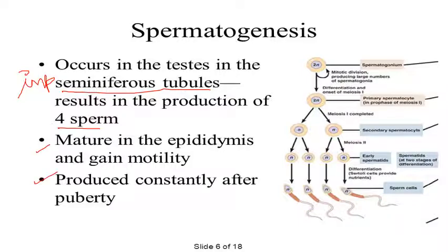This process of spermatogenesis is constantly taking place after puberty till death. But there is a difference: in females, oogenesis begins before birth, and the fate of the ovum is decided before birth. Oogenesis continues until menopause, which occurs at around 45 to 50 years of age. So oogenesis is not a continuous process till death, whereas spermatogenesis is — this is a major difference.